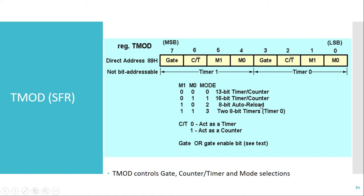If the bits are 10, Mode 2 is selected, which is the auto-reload mode. The last mode is available only for Timer 0 — it is the two 8-bit split timer mode, where we can split the 16-bit timer into two 8-bit timers and operate them separately. This completes the format of the TMOD SFR.